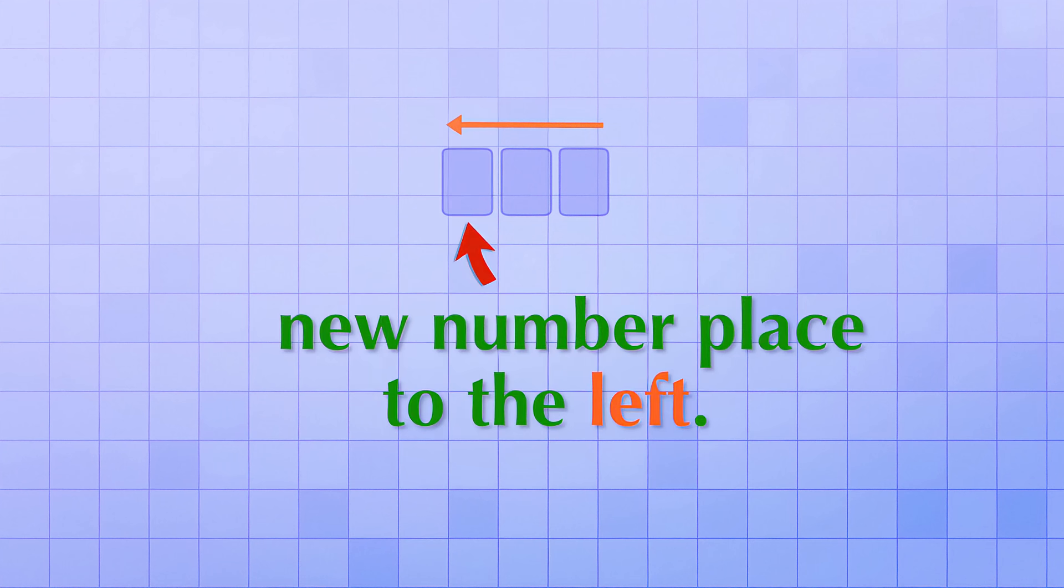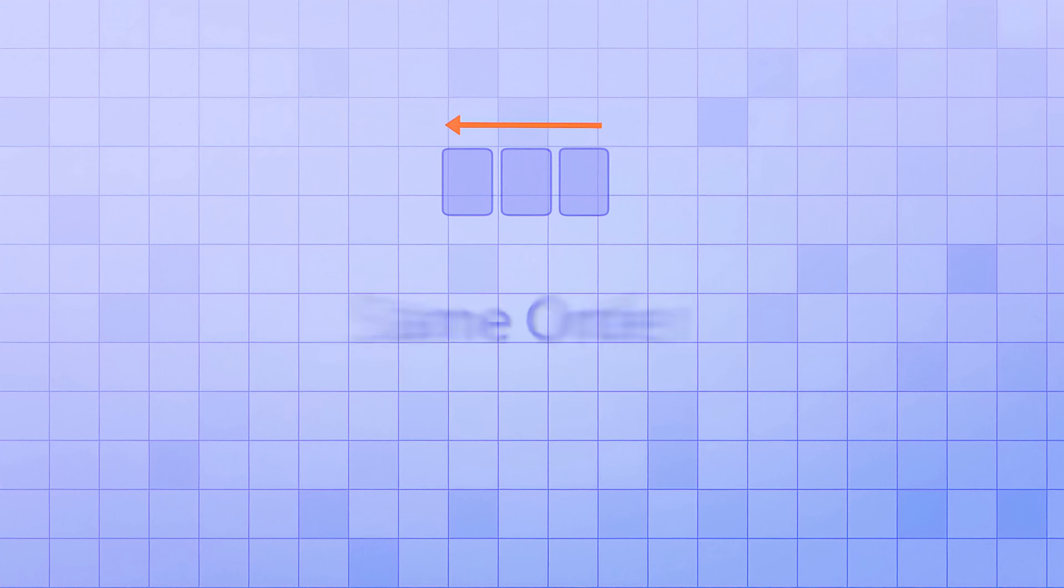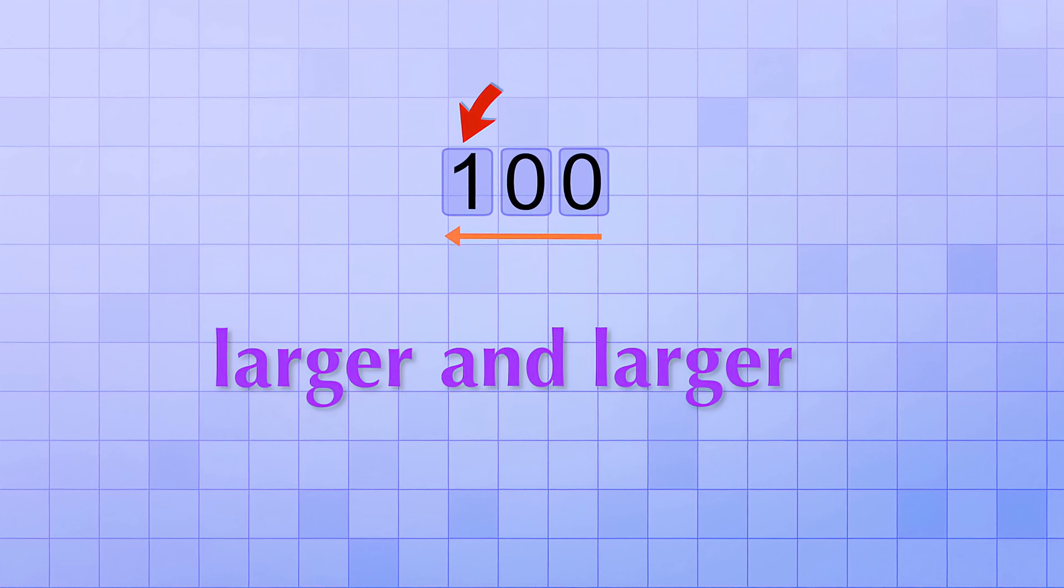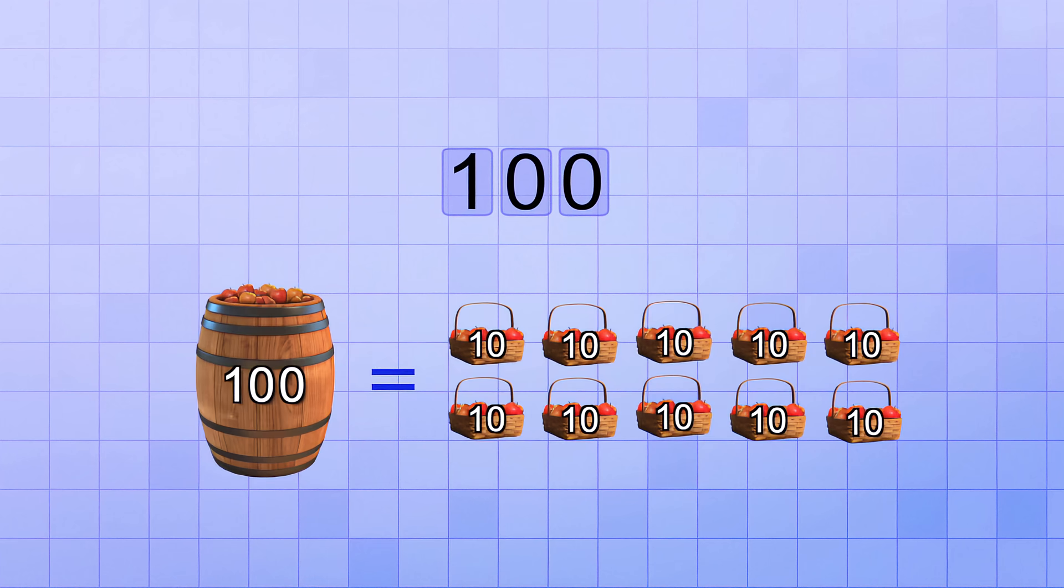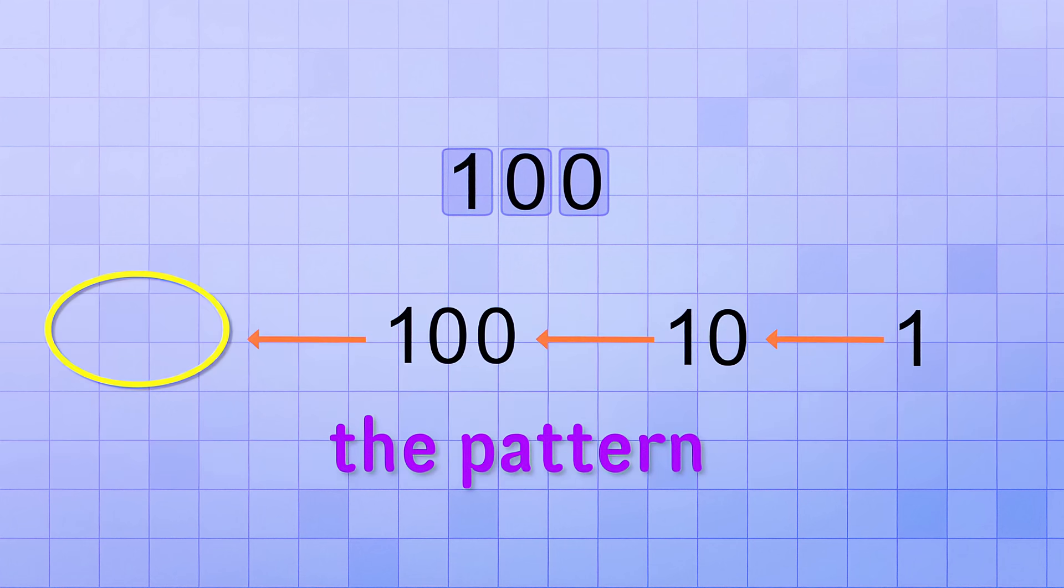And have you noticed that each time we got a new number place to count larger groups, we placed it to the left of the previous number place? That's important because number places are always arranged in the exact same order. Starting with the ones place, as you move to the left, the number places represent larger and larger amounts. And did you also notice that each new number place represents groups that are exactly 10 times bigger than the previous number place? 10 is 10 times bigger than 1 and 100 is 10 times bigger than 10. That's really important because it helps us see the pattern for even bigger number places.